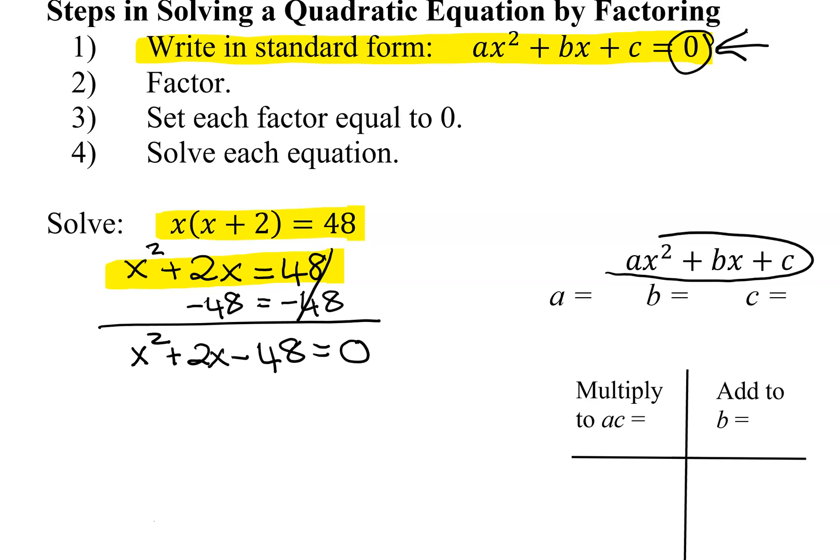And remember, we're going to do it by the AC method. A in this case is 1, B is positive 2, and C is negative 48. A times C is 1 times negative 48, which is negative 48. So I need 2 numbers that multiply to negative 48 and add up to 2.